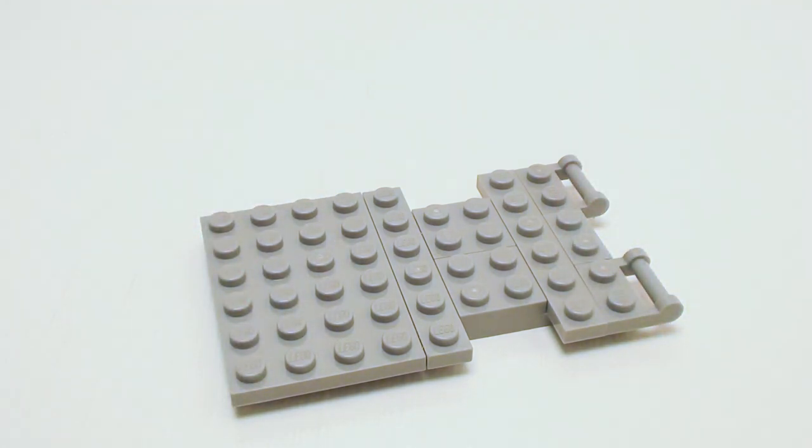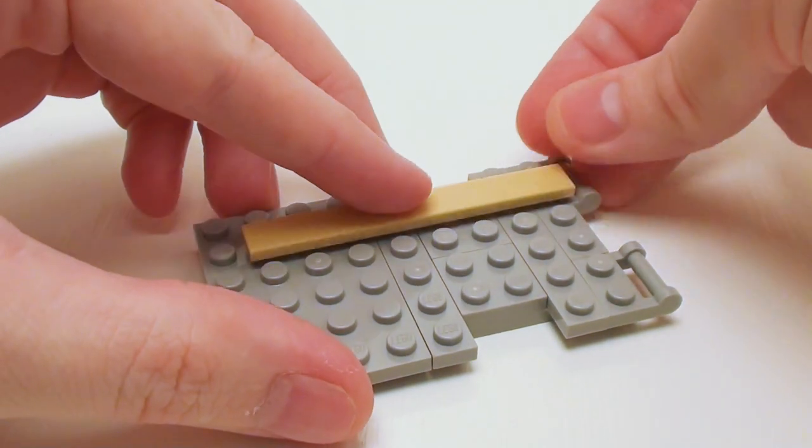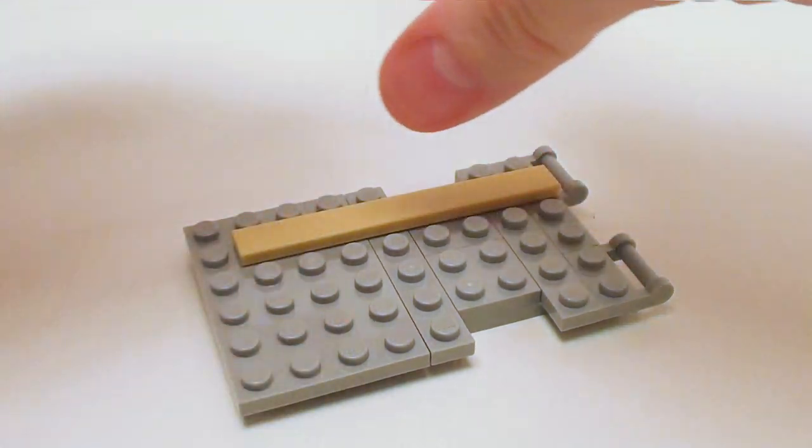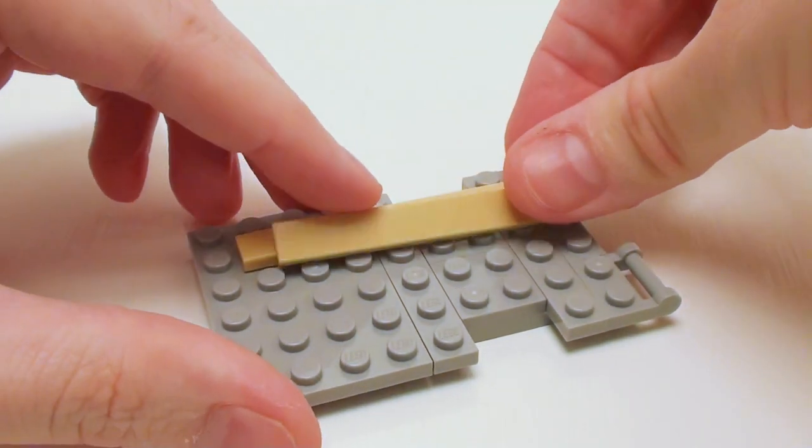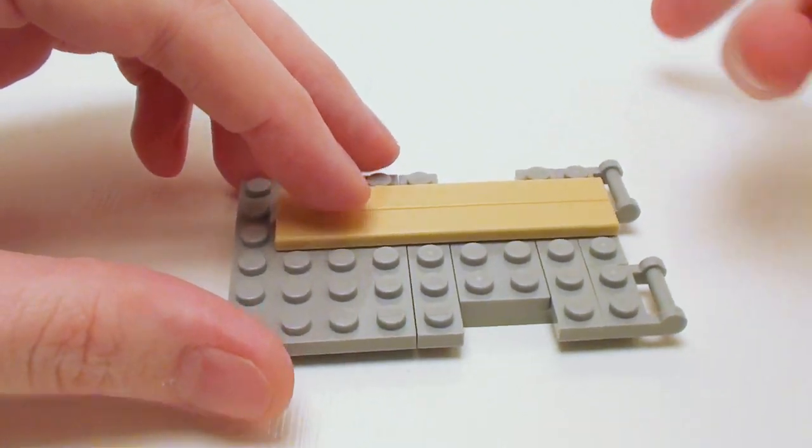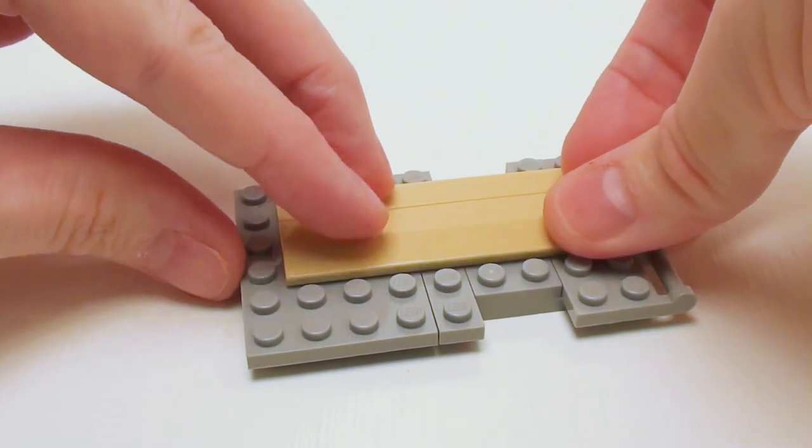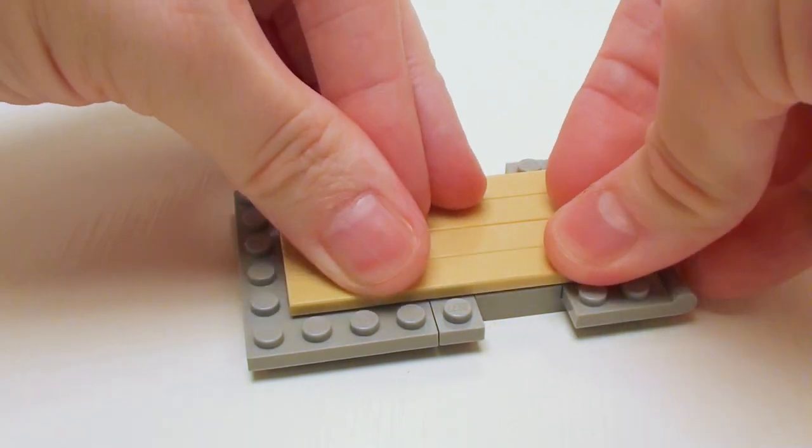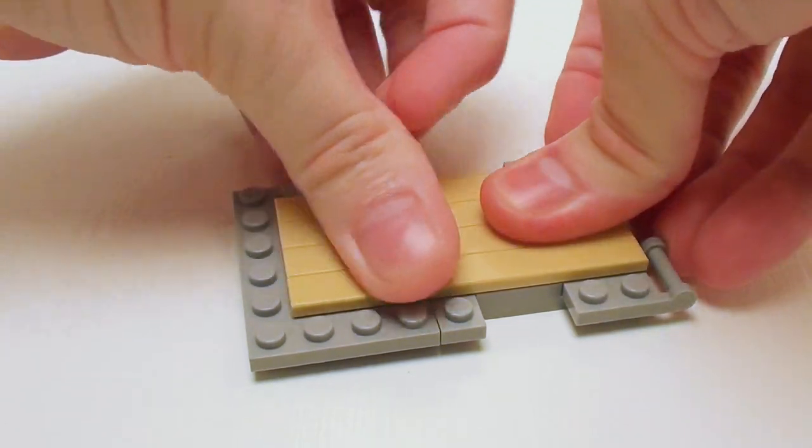Now we're going to place four 1 by 8 flat tiles. We want to make sure that the tiles run this side with the plates with sticks. This is going to smooth off the bed of the trailer.